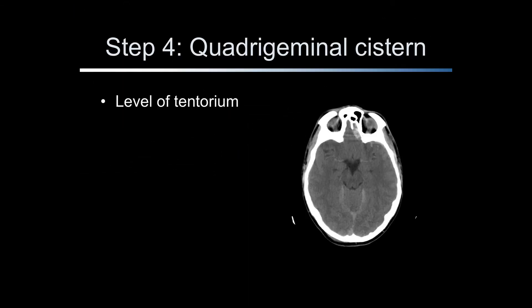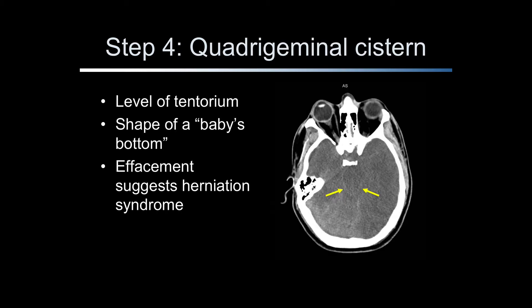Step 4 in this process is the evaluation of the quadrigeminal cistern, which is located at the level of the tentorium. It is shaped like a baby's bottom when the legs are held up as though the diaper is being changed. If the quadrigeminal cistern is effaced from mass effect or edema, a herniation syndrome is present. In this scan, the quadrigeminal cistern, indicated by the yellow arrows, is completely effaced and appears to contain blood.